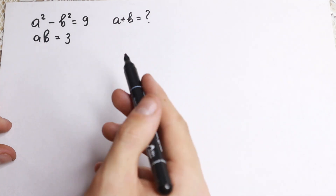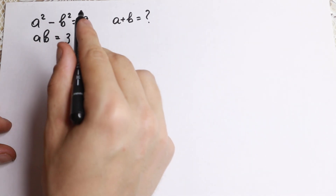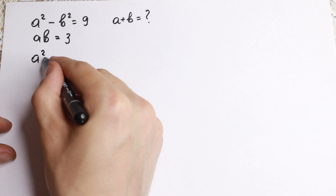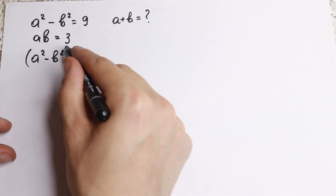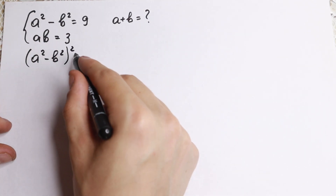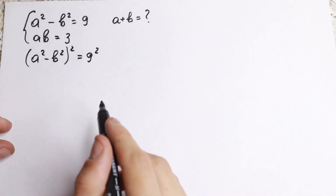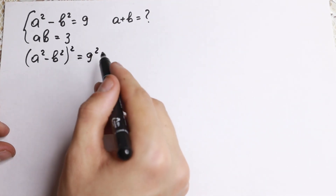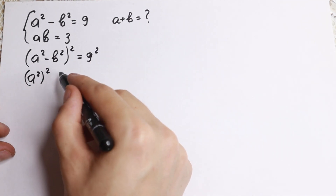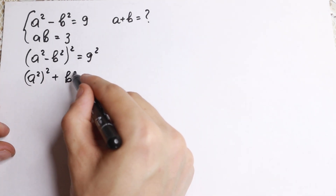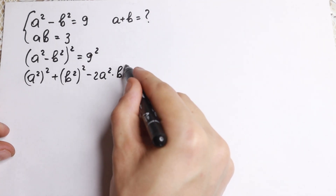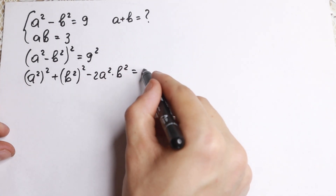Because we have a square, let's work to find a plus b without the square. First, let's write a squared minus b squared and square the left-hand side, so both sides squared: the left side equals 9 squared. Squaring it gives us the formula (a² - b²)² — first squared a squared, plus b squared, minus 2a²b². And 9 squared equals 81.